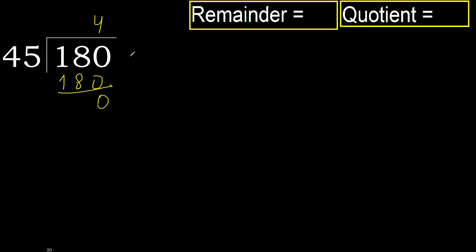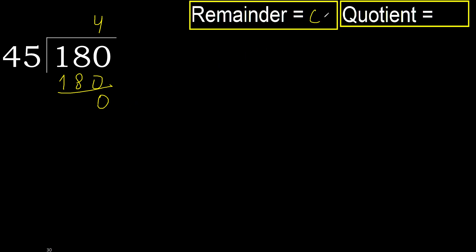Next. There is no number, therefore finish. 0, therefore 180 divided by 45 is 4.